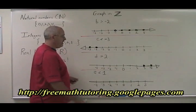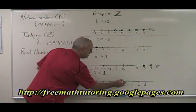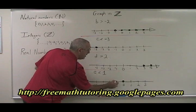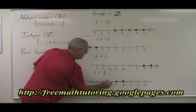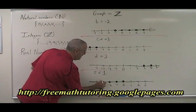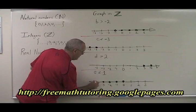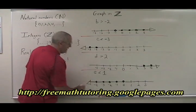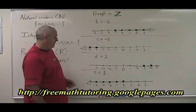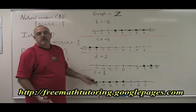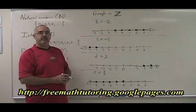E less than 1. 0 is less than 1, and so are all the negative numbers. And then we go on forever in the negative direction. 1 is not less than 1, so it cannot be included in the answer.